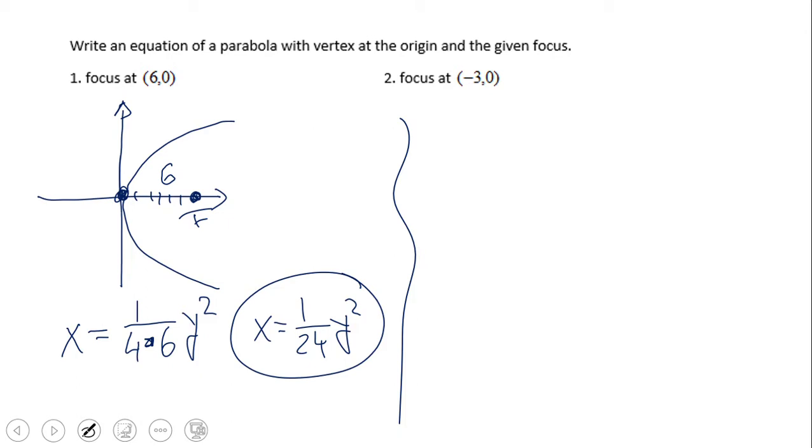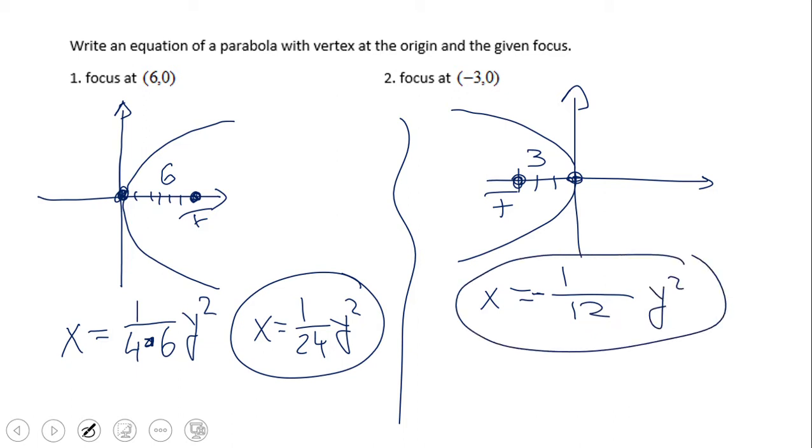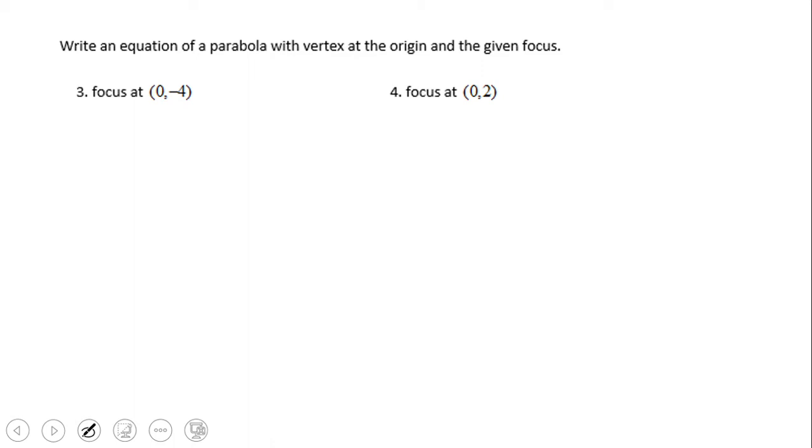Go ahead and pause the video clip and do number two. If you have this equation for number two, x equals negative—right, the negative because it's open to the left—one over 12 y squared, that is wonderful. C is three in this case.